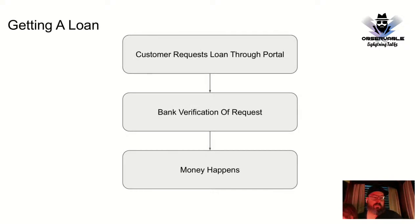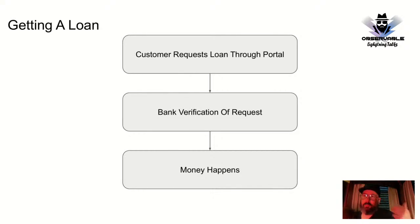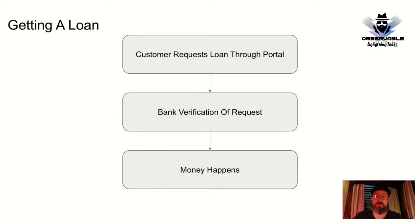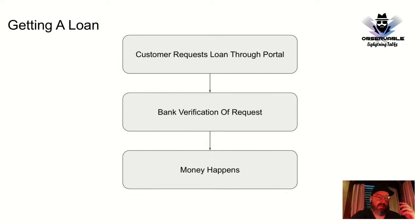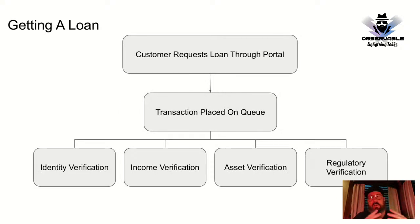Looking at financial transactions: from a logical perspective it's fairly straightforward — log on to the bank's website, submit information, the bank verifies it, and money happens. But when you step back and look at the implementation, there are really two high-level states: money and no money. Behind the scenes, however, a user submitting a loan application places a long-running job onto a queue, such as a service bus.